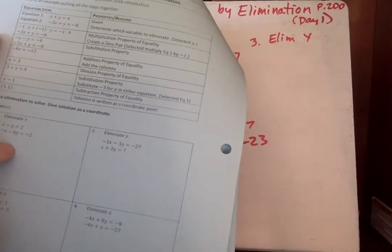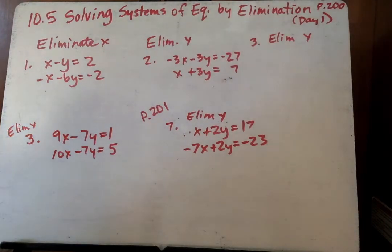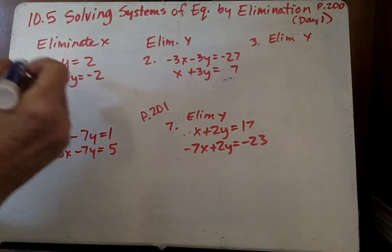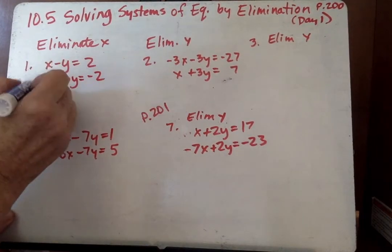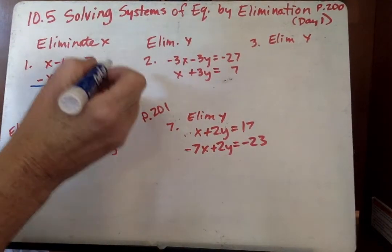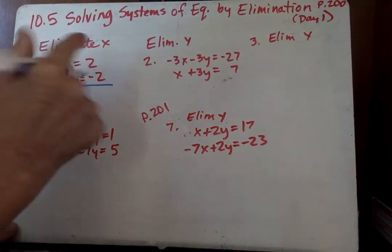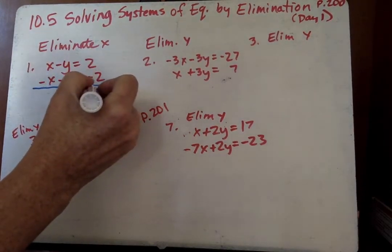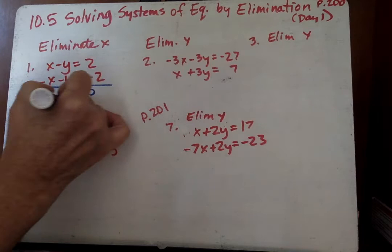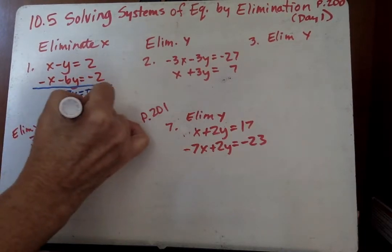I'm going to go ahead and jump to number 1 here where it says x minus y equals 2 and negative x minus 6y is negative 2. So I'm going to go ahead. I can see I'm going to eliminate x because they're opposites here. So when I add those two together, remember that's a negative 1y. So I get negative 7y equals 2 plus a negative 2 is 0. Divide by negative 7 and y equals 0.